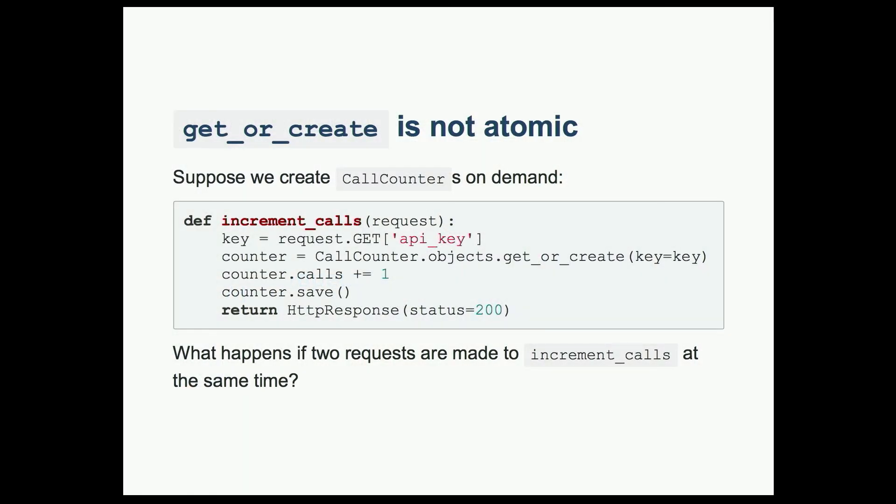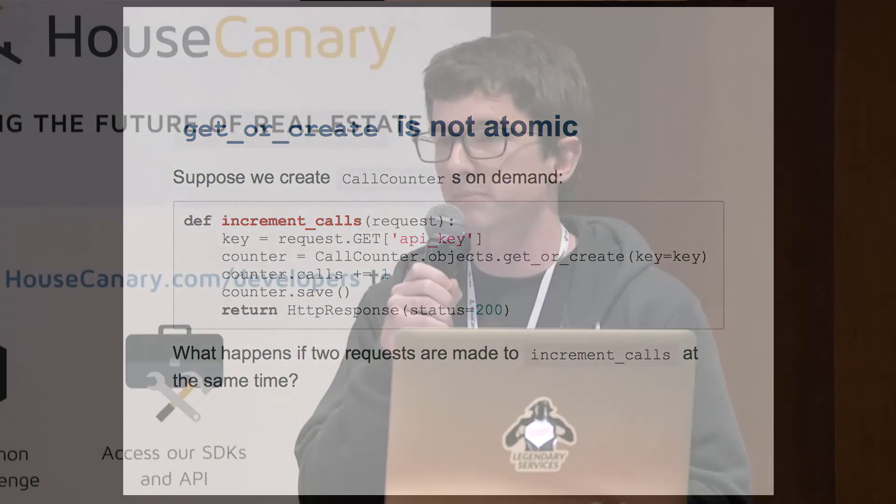The second pitfall is that get or create and its cousin update or create are not necessarily atomic. So suppose we create call counters on demand. We have basically the same function here, except I've replaced get with get or create, so that if a call counter is not found, it will create it. What happens if two requests are made to increment calls at the same time, assuming we even have atomic requests on?